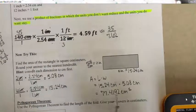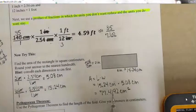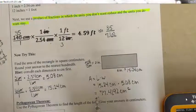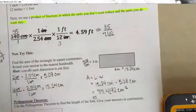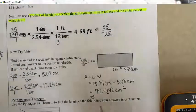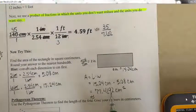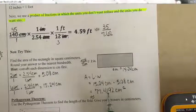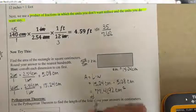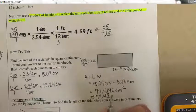It asks us to round to the nearest hundredth, so I look at the hundredths place and the digit after it. That digit is 9, which is 5 or bigger, so I round up to .42. The answer is approximately 77.42 centimeters squared.